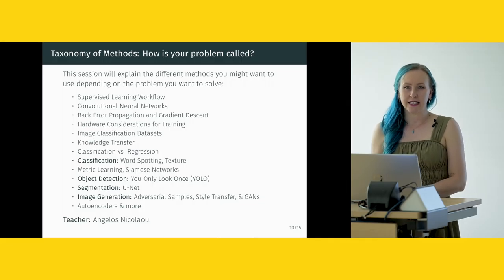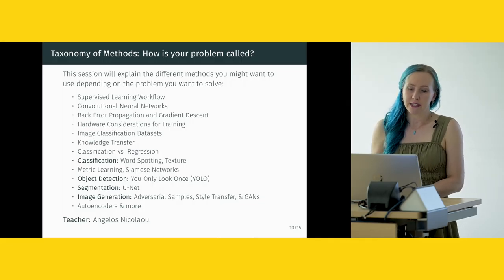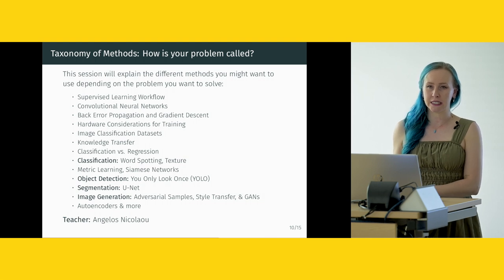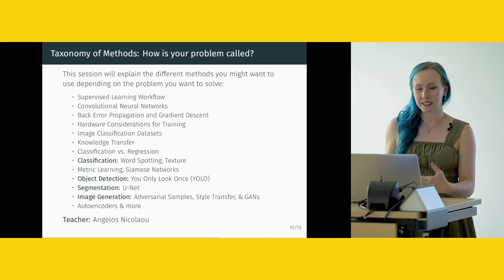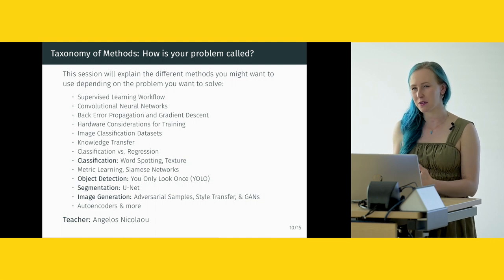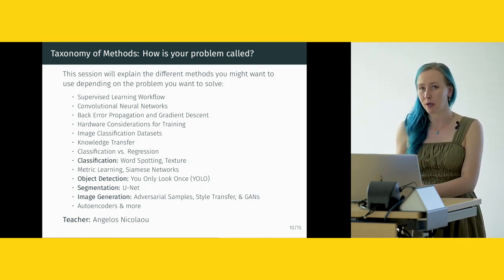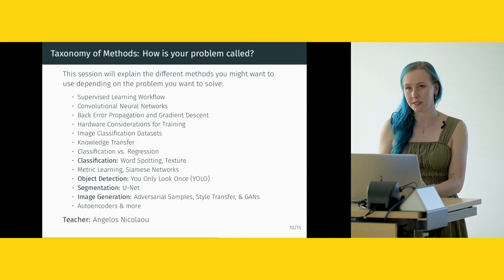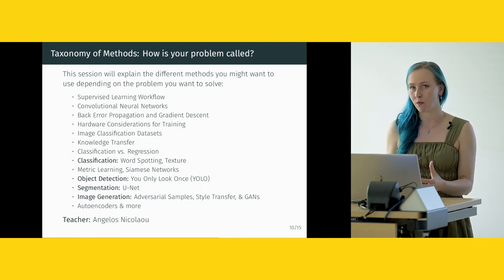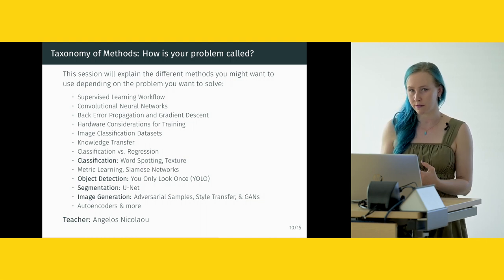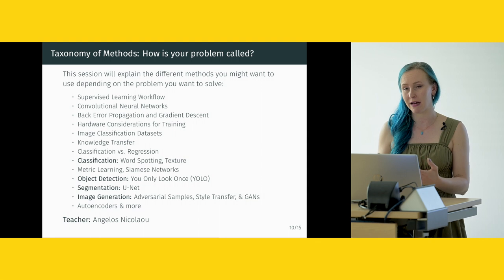The next lecture is called Taxonomy of Methods, or 'How is your problem called?' Our computer vision expert Angelos Nikolaou will dive into what types of methods exist in computer vision. Binary classification is by no means the only type of problem. You need to know what your problem is, what you want to do with your data, what the computer vision name for that is, and whether you need a pipeline consisting of multiple methods.